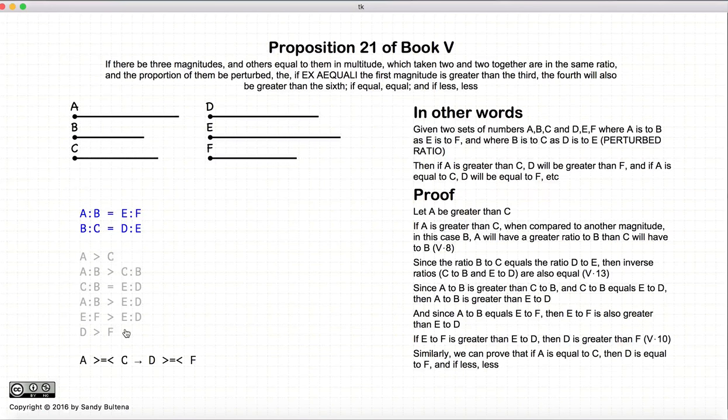Or in more generic terms, if we tried the same logic for A is equal to C and ran through the same logic, or if A was less than C and ran through the same logic, we could come up with a more generic statement. That if this is true, then if A is bigger than C, D is bigger than F, and so on and so forth.